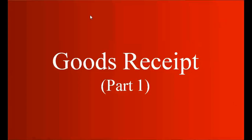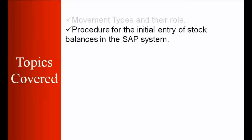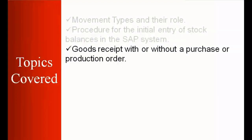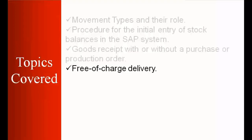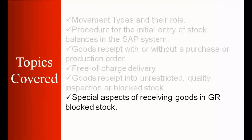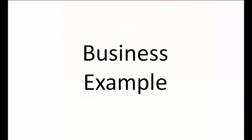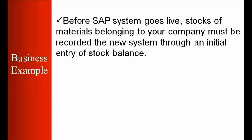Welcome to today's class on inventory management topics. Today we'll be moving forward to our next topic: Goods Received Part 1. The topics we're going to cover are movement types and their role, procedure for the initial entry of stock balances in the SAP system, good receipt with or without a purchase order or production order, free of charge delivery, good receipt into unrestricted, quality inspection, or blocked stock, special aspects of receiving goods in GR blocked stock, and automatic generation of a purchase order at the time of goods receipt.